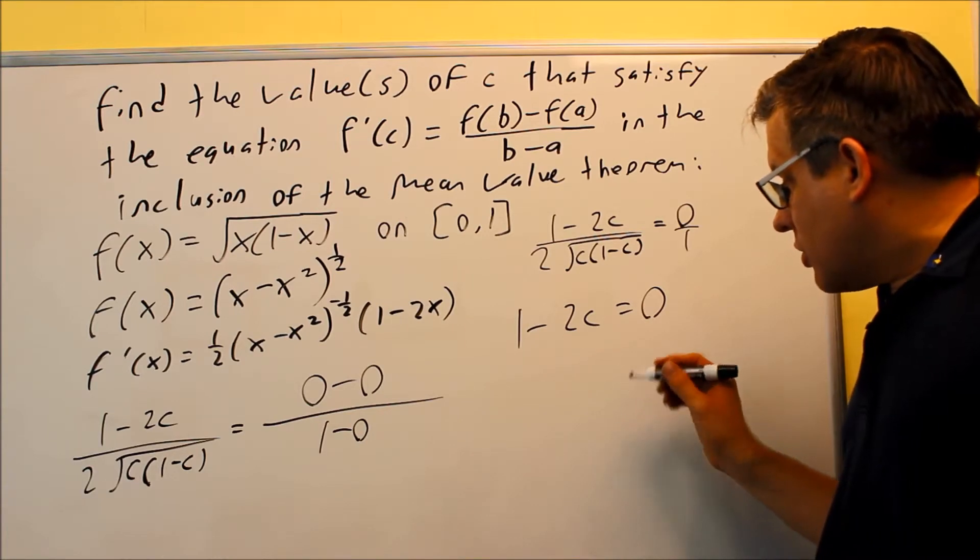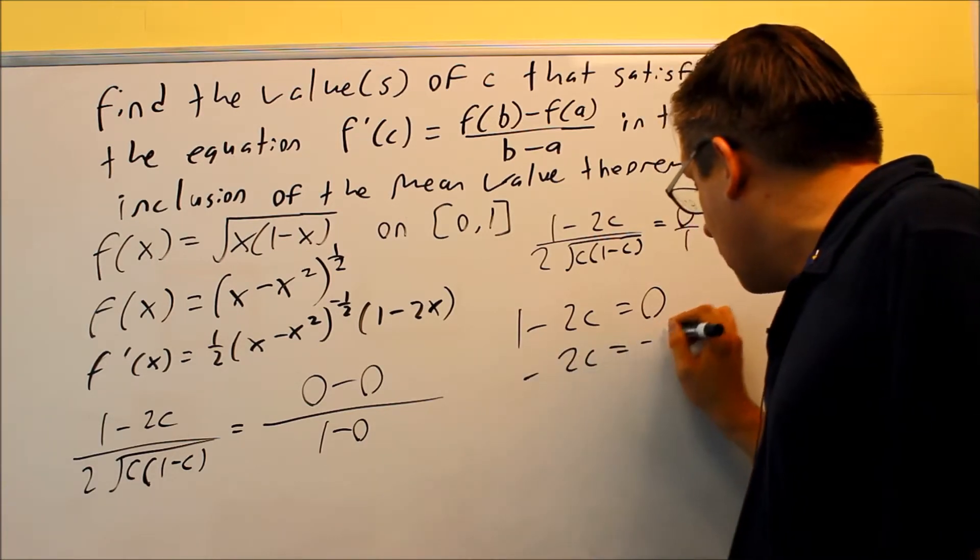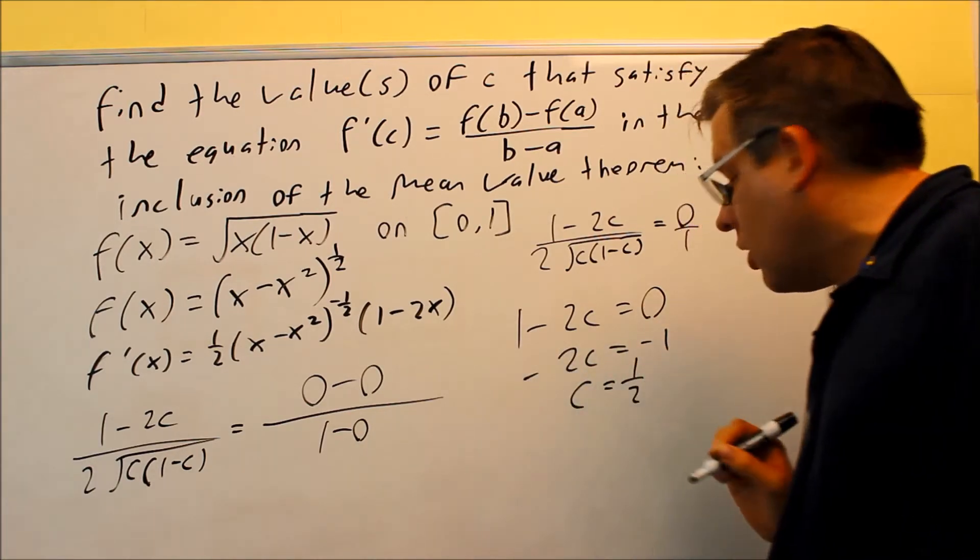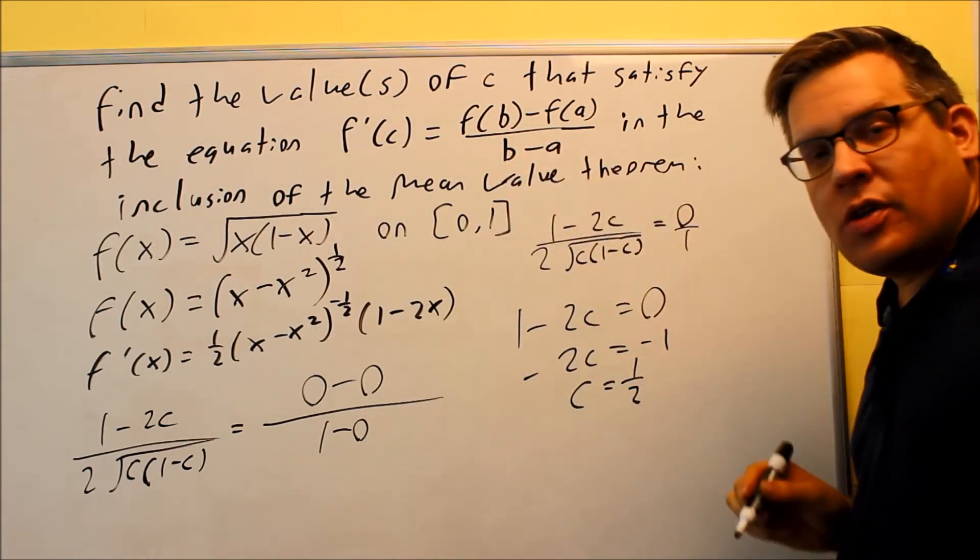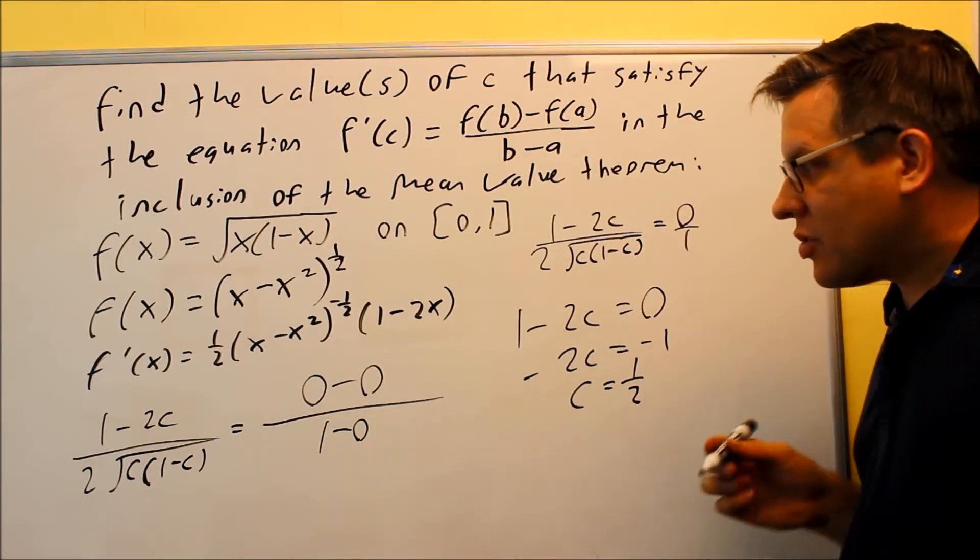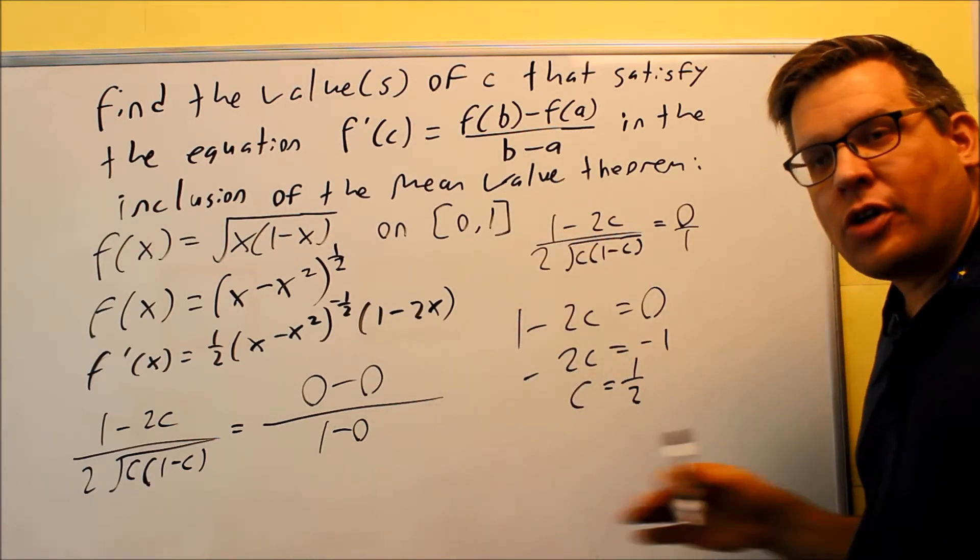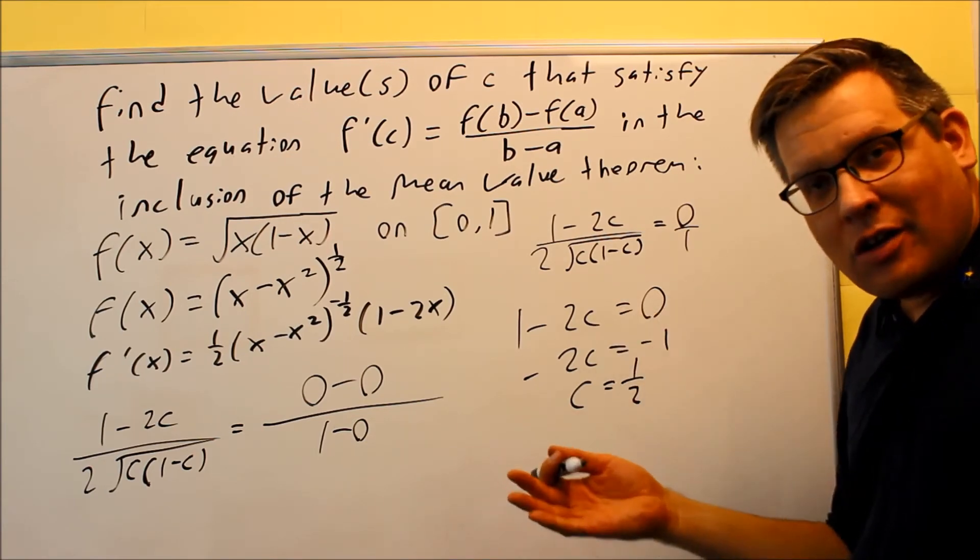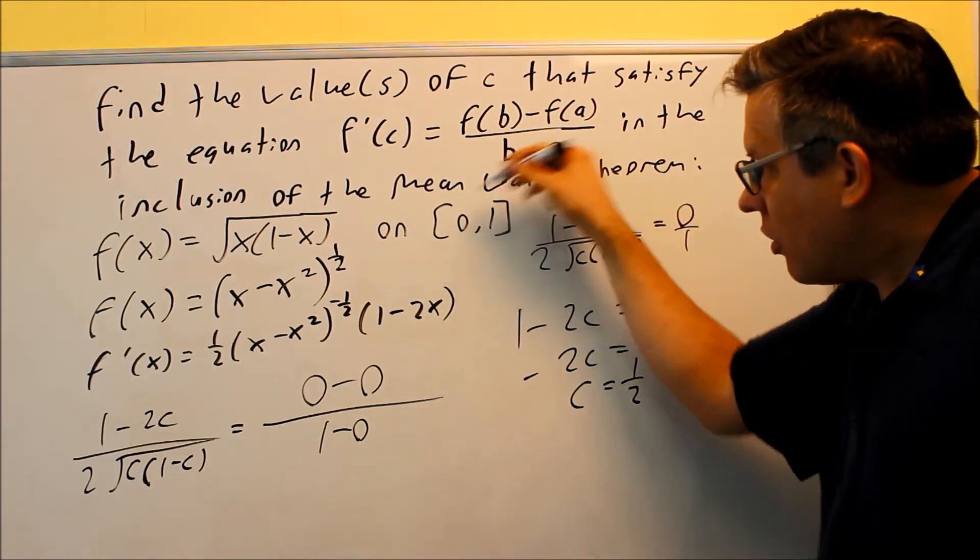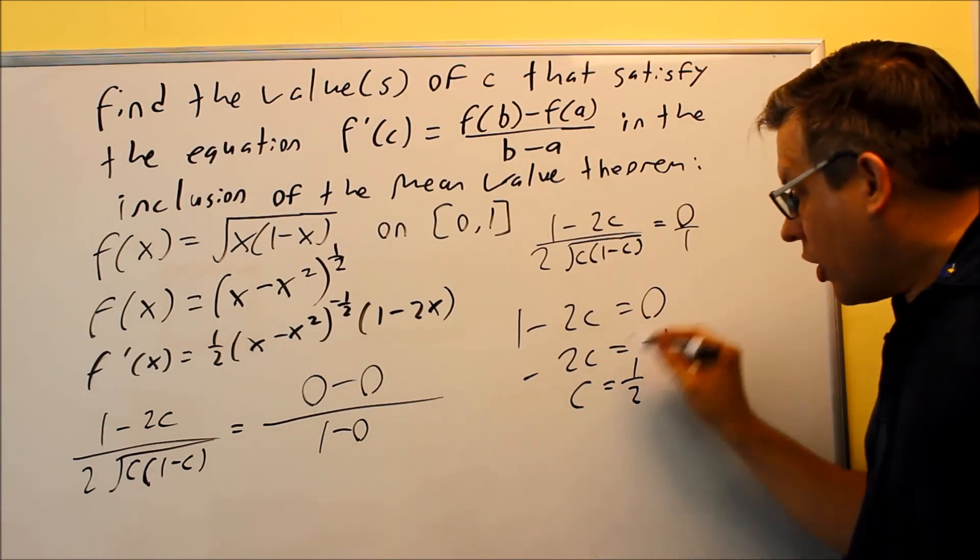If I solve for this, I'm going to get negative 2c equals negative 1, c is equal to 1 half. Now 1 half, that number does definitely fit between 0 and 1. So therefore, it makes sense if we've already talked about it before and we know that mean value theorem can be applied, then you're guaranteed a c value that's going to fall in between your interval from A to B and 1 half certainly does.